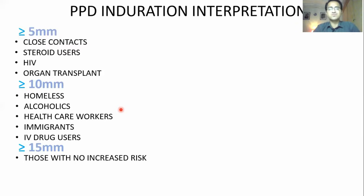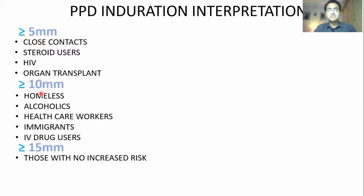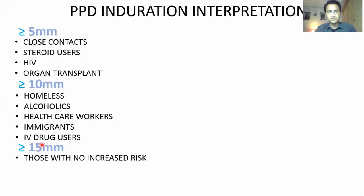Then there is a patient who has not been exposed to tuberculosis — no risk factors and no exposure to TB. In such patients, an induration greater than 15 millimeters will be considered positive. To summarize: if the patient is immunosuppressed, greater than 5 mm is positive; if the patient is in a high-risk group exposed to TB patients, greater than 10 mm is positive; and if the patient is not at increased risk and not immunosuppressed, greater than 15 mm is considered positive.